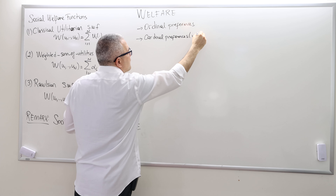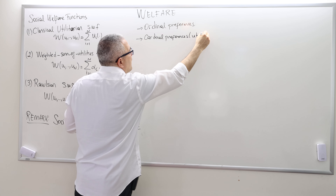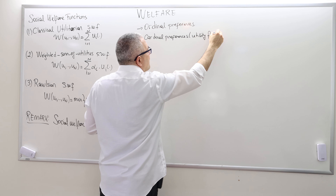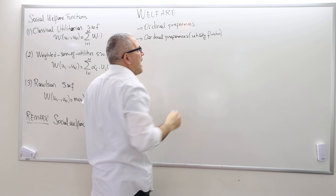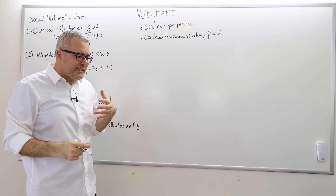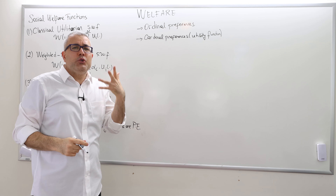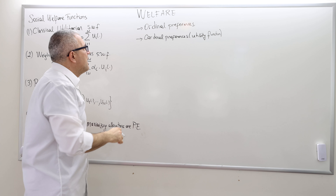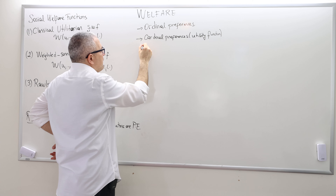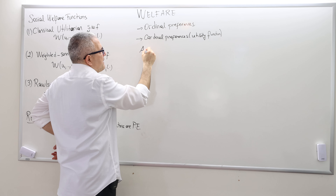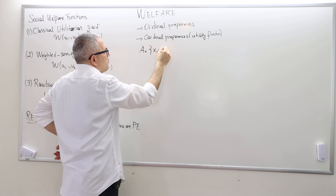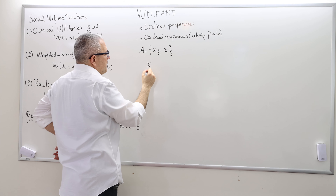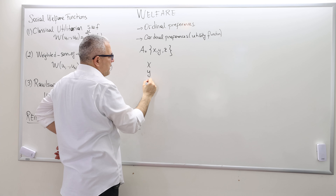The intensity kicks in when we talk about cardinal preferences. These are utility functions. The agents have a utility function over alternatives and assign a utility level for each alternative.